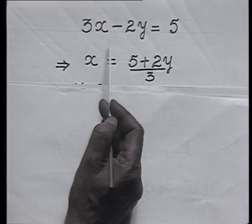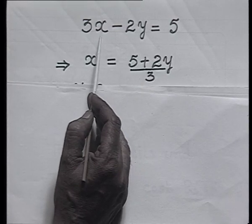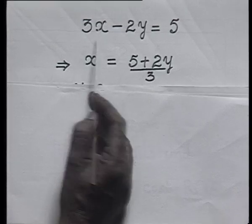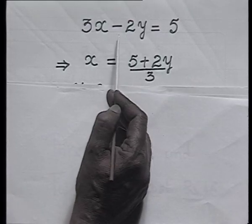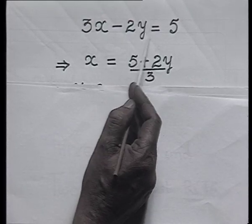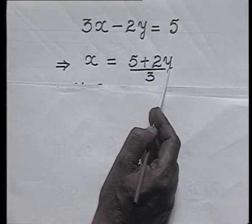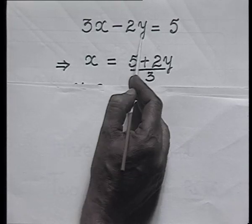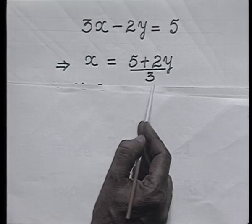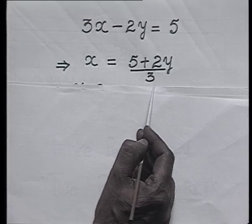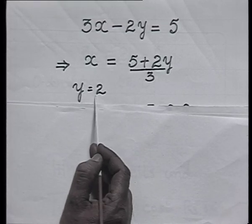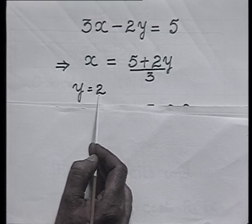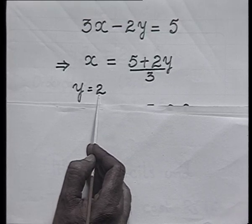To get that, we change the subject. I transform this equation: x equals 5 plus 2y upon 3, by adding 2y to both sides. Now, I give any arbitrary value to y and corresponding to that value, I will get one value of x.